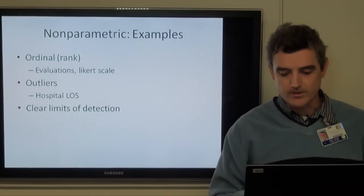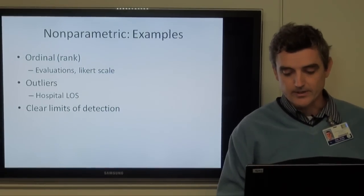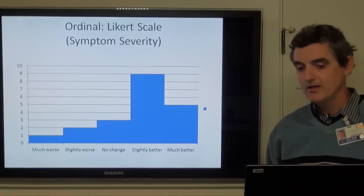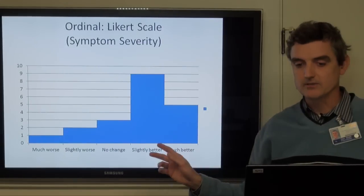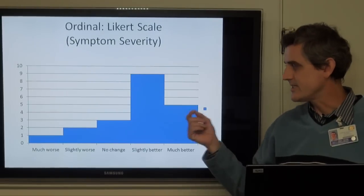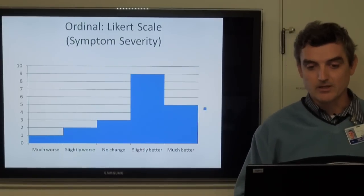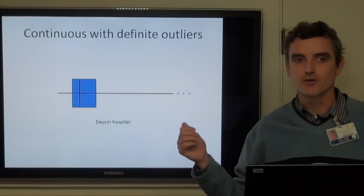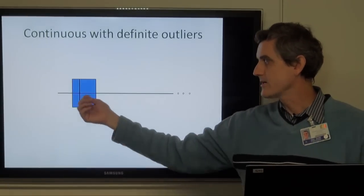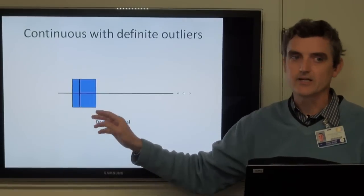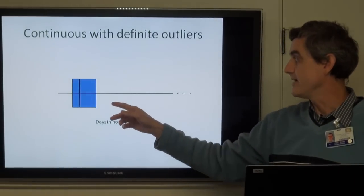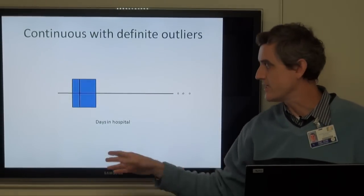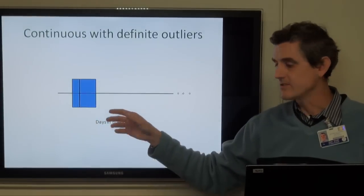This is an example of a Likert scale looking at symptom severity, where we can see that the responses tend to cluster around the 'slightly better' bar, so teasing out the distribution is a bit of a challenge. Or consider a continuous distribution with a few definite outliers — if you recall our box-and-whisker diagram, the box ranges from the first quartile to the third quartile, the line in the middle is the median, and we can see the range extends very far to the right, showing a few people staying in the hospital for a very long time.